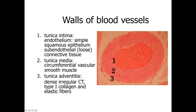Outside of the tunica media is the tunica adventitia, a dense irregular connective tissue with lots of type 1 collagen and some elastic fibers. The tunica adventitia anchors the blood vessel into the surrounding tissues. As we look at different categories of blood vessels, we'll see different amounts of tunica media and tunica adventitia. The tunica intima — that innermost simple squamous epithelium — is always going to be present, regardless of the blood vessel or its size.